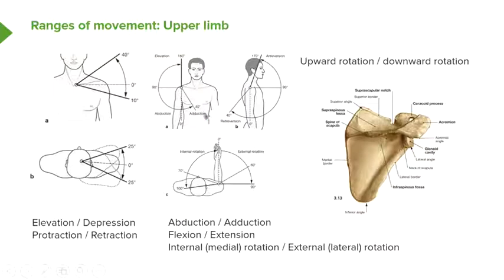We also have what's known as abduction and adduction. Abduction is when the upper limb is moved outwards, so it's moved in this direction. And then when the upper limb is brought back to the trunk, we have adduction, where the upper limb is returned to sit alongside the trunk.